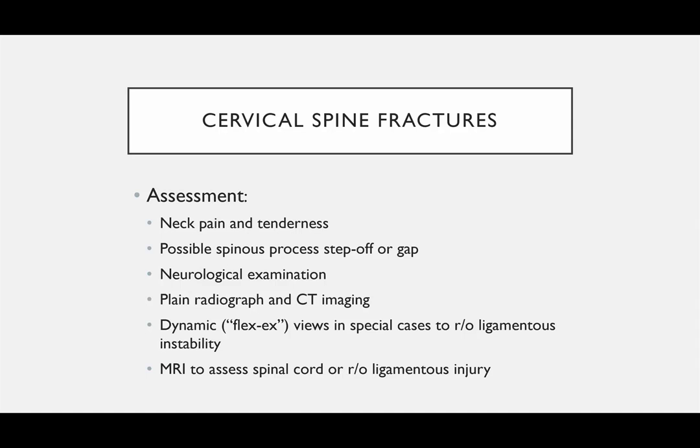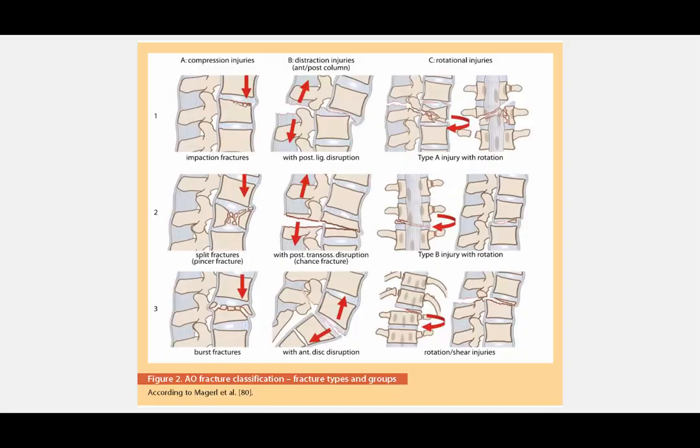You're going to check plain radiographs, and very often we go right to CT imaging if you're really concerned. You can get dynamic flexion-extension views in special cases if you're still concerned about an injury with negative X-rays and need to rule out a ligamentous injury. MRI can also help — not as easily done in an emergency setting, but it can assess the spinal cord or rule out ligamentous injury.